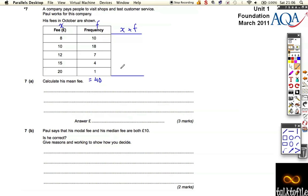Now, if we do this x times f, he got paid 8 pounds 10 times. So that means for those visits, he got a total of 80 pounds. For these visits, he got paid 10 pounds 18 times, so 18 times 10 is 180 pounds total for those visits. 12 times 7 is 84, 15 times 4 is 60, and 20 times 1 is 20. That gives him a total of 424 pounds.